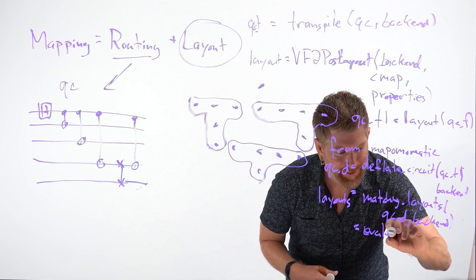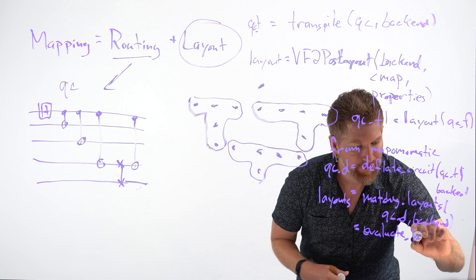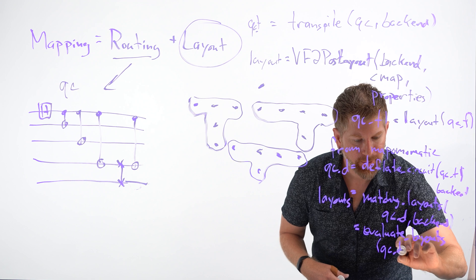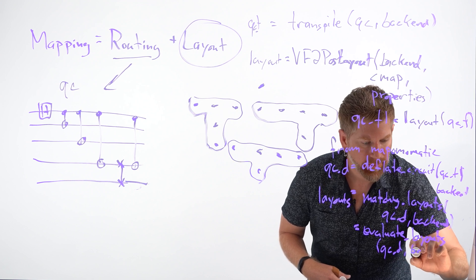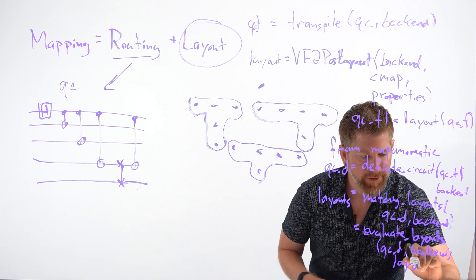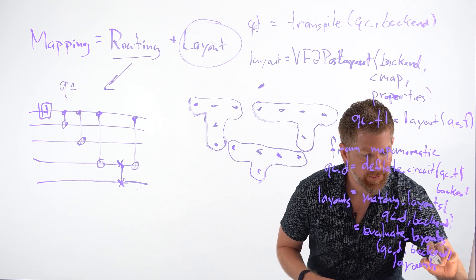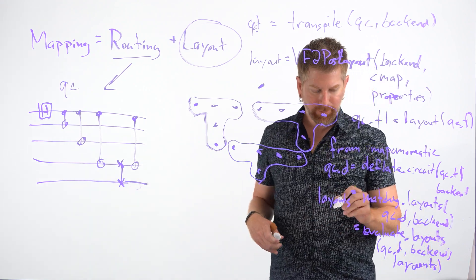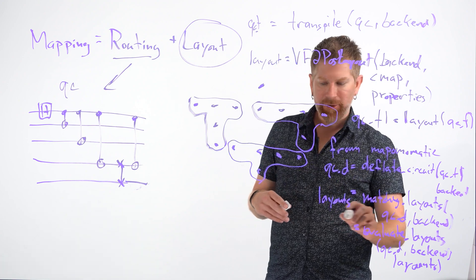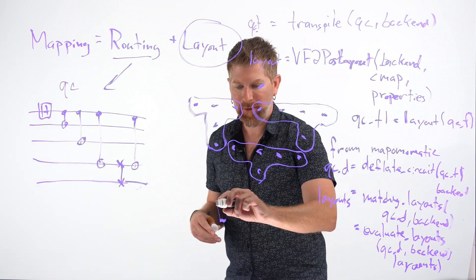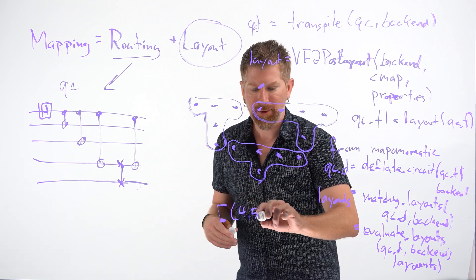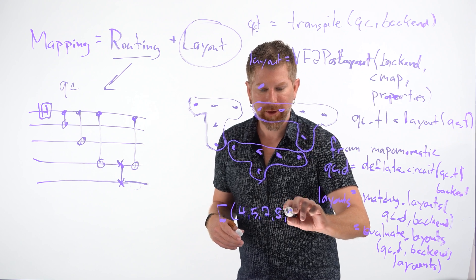Evaluate layouts. And it will take as an input the layouts we found. The elements this returns is going to be a list of tuples, with each one of those giving you a possible layout by the actual qubit connectivity, for example, followed by a score where lower is better.